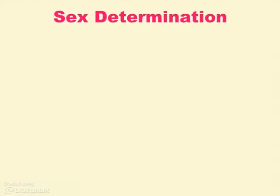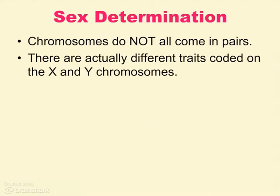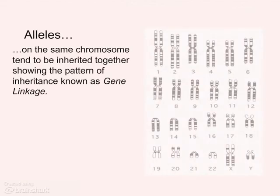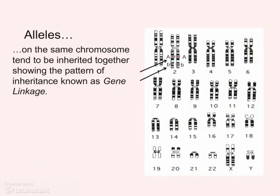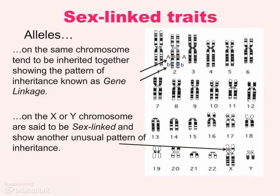This means that chromosomes don't actually come in pairs all the time — those X and Y chromosomes actually have different traits coded on them; they code for different proteins. So in males, sex chromosomes aren't actually homologous. Alleles that are on the same chromosome tend to be inherited together — we call this gene linkage. When they're on that last set of chromosomes, the sex chromosomes, the X or Y, since they are inherited along with gender, we call those sex-linked traits.